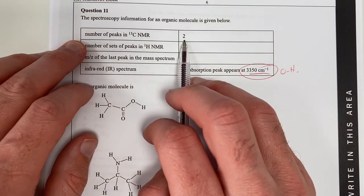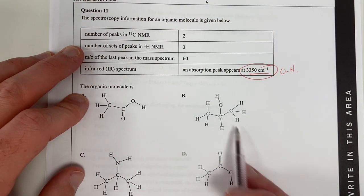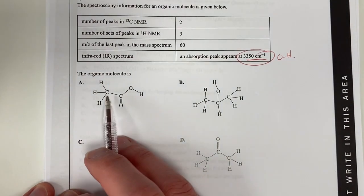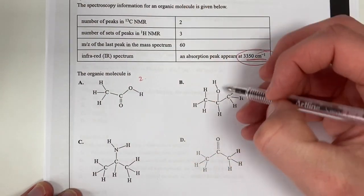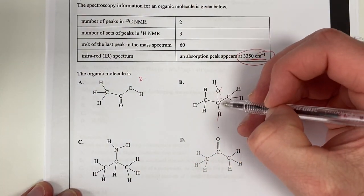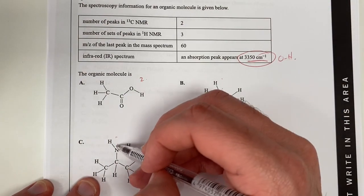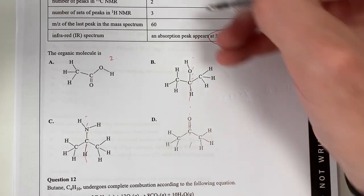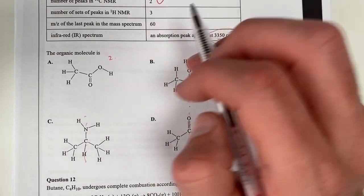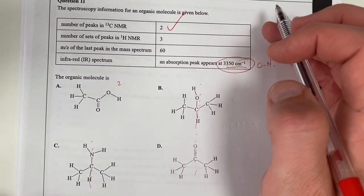But, number of peaks. We've got two peaks. Which of these ones will produce two peaks? This guy's got two carbons. There's no symmetry here. That's two peaks. This one here's got symmetry here. We're going to have two peaks there. This guy here, again, symmetry there. Two peaks on the carbon NMR. This guy here, again, we're going to have two peaks on there. So they all have two peaks on the NMR, on the carbon NMR spectrum.